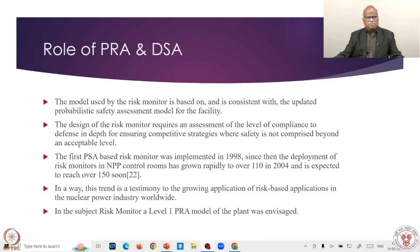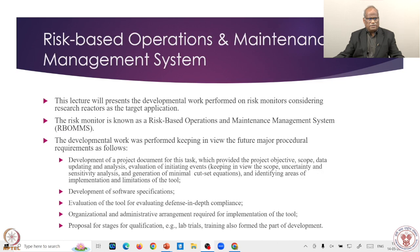The first risk monitor was built in 1998. Since then, deployment of risk monitors in nuclear power plants has rapidly grown to 110 plants — the reference is number 22. This trend has grown and matured. The R&D component covers updates done here. The resulting system is the Risk-Based Operation and Maintenance Management System, called RBO-MOMS.